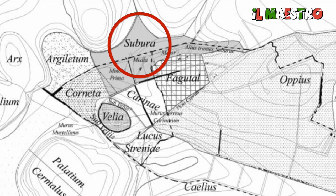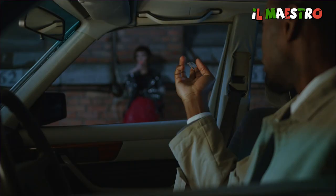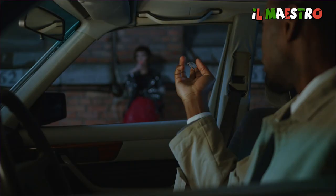Ma cosa significa Suburra? Suburra was a crowded lower-class area in the city of Rome. Julius Caesar lived in the Suburra district, which was a place where politicians met with criminals to plot, as well as a well-known red-light district.